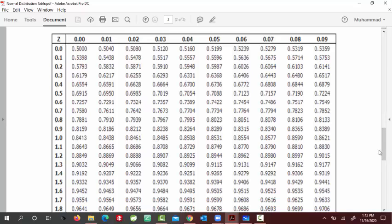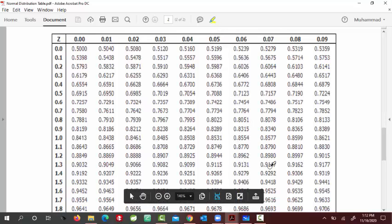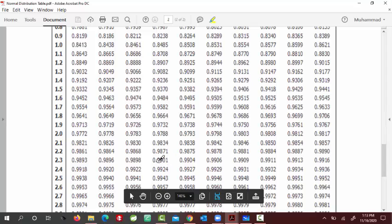From the normal distribution table, we look for the 0.99 here. So this is approximately 0.9901, this is 0.9898, so this is below, this is a little bit above, so we just take this one, right.